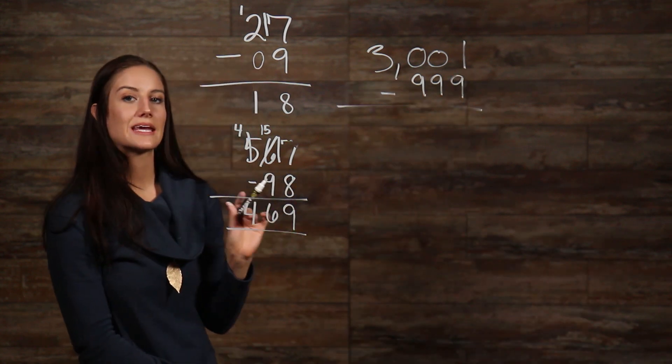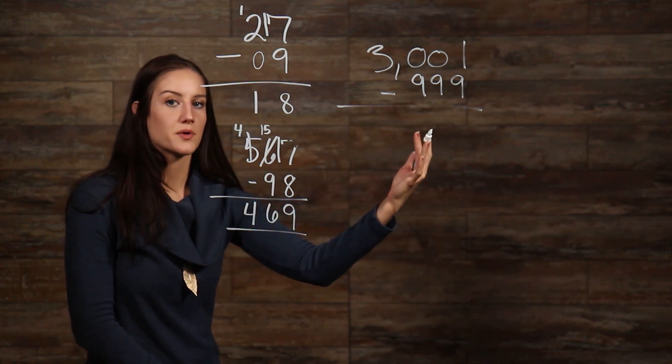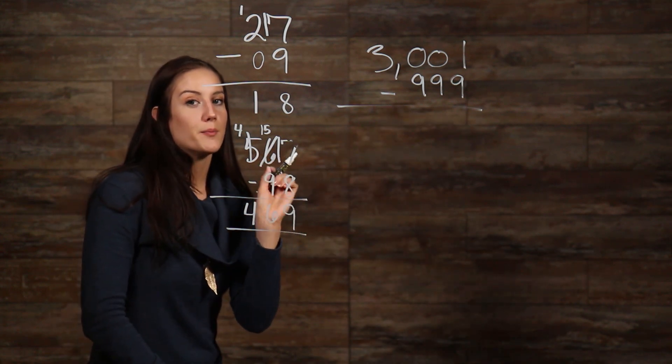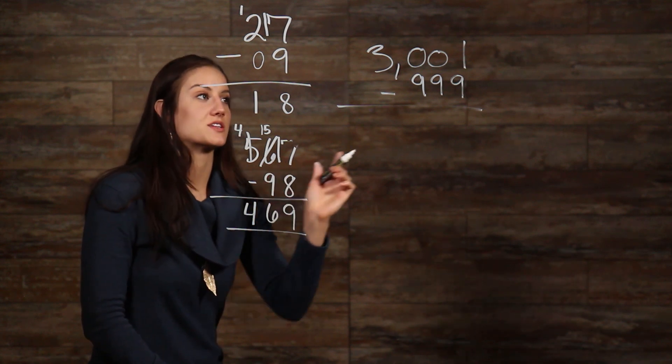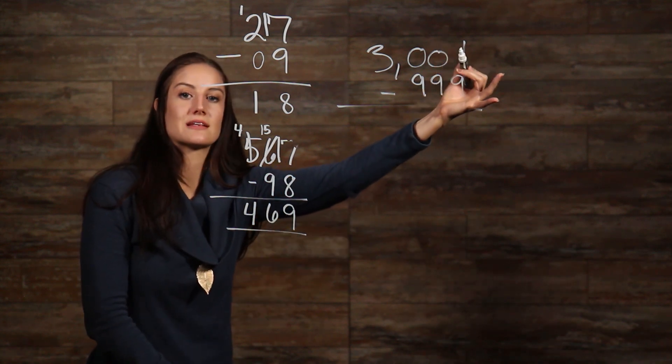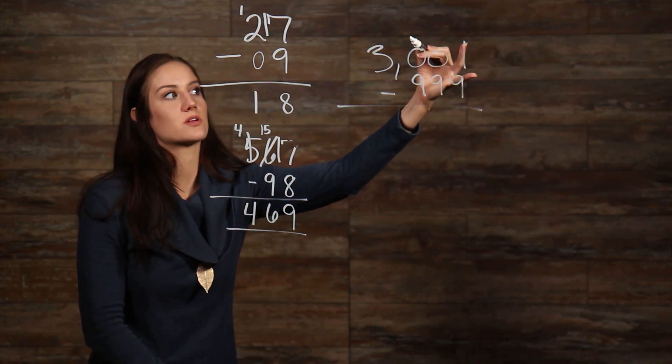So, we know we can't take 9 away from our 1 here without giving us a negative number, so we need to borrow. But, when we go to borrow, in our tens place, we have a zero. We have nothing to take from, and that's the same with our hundreds place.